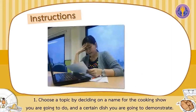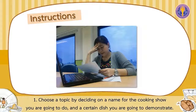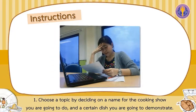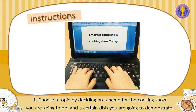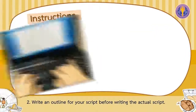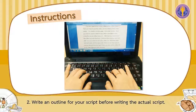Instructions. First, choose a topic by deciding on a name for the cooking show you are going to do and a certain date you are going to demonstrate. Second, write an outline for your script before writing the actual script.